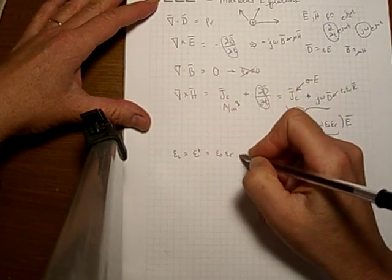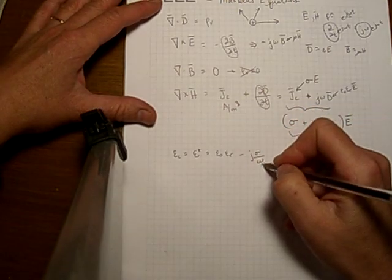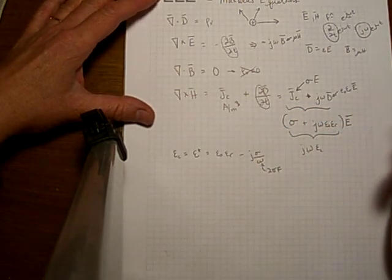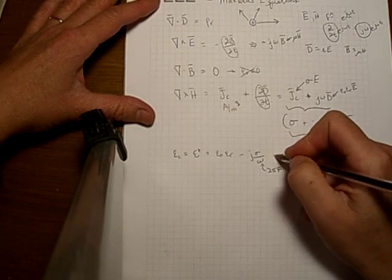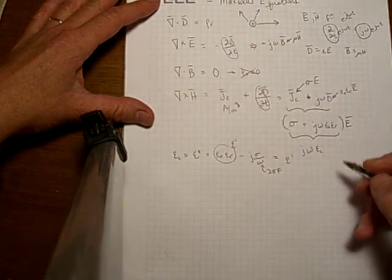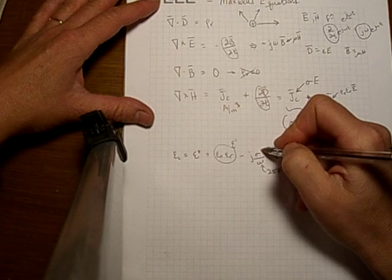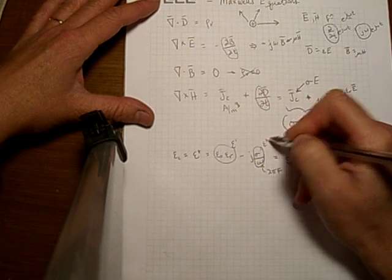Complex epsilon is epsilon naught times epsilon R minus j sigma over omega, where omega, of course, is 2π times the frequency in Hertz. This is also written as something called epsilon prime. You can see that right here this part is epsilon prime minus j epsilon double prime. So this is epsilon double prime.